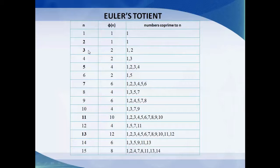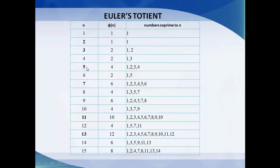One important observation is that for prime numbers — like 2, 3, 5, 7, 11, 13 — the Euler's totient φ(n) is simply n−1. For example, if 2 is prime, φ(2) = 2−1 = 1. For 3: φ(3) = 2. For 5: φ(5) = 4. However, for a non-prime number like 8, 8−1 = 7 is not the Euler's totient. This trick works only for prime numbers, and we make use of this for implementing our system.